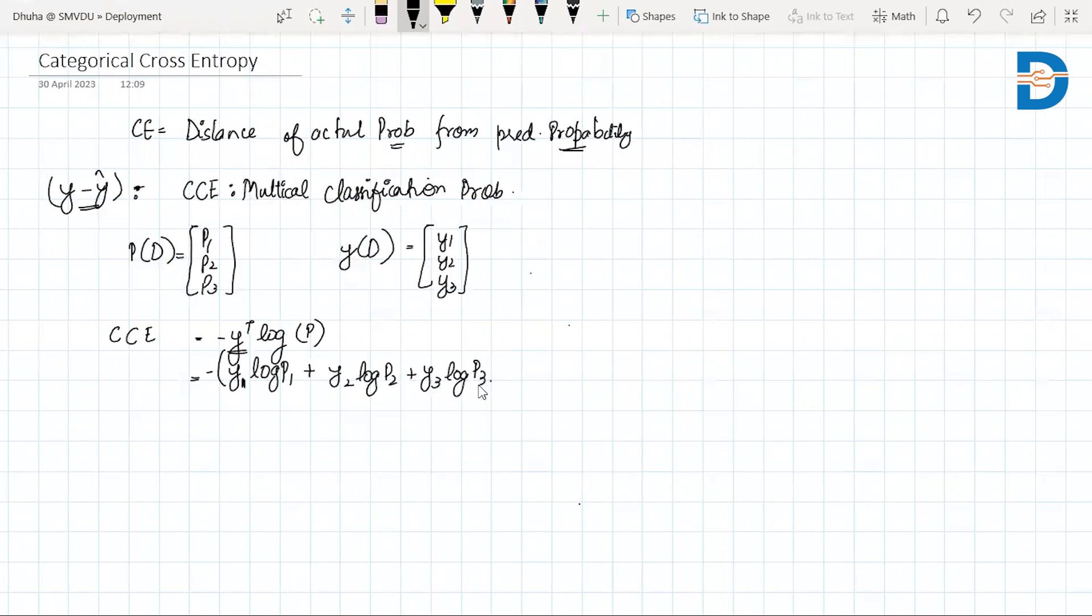For now, we only have three classes - let's say apple, banana, and orange - so we use three terms. But it's not restricted to only three terms. For as many classes as you have, you can find the categorical cross entropy for all values.